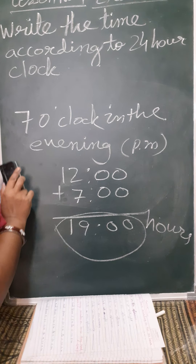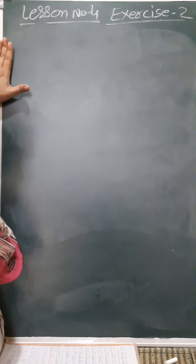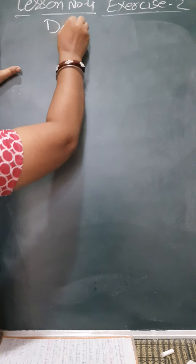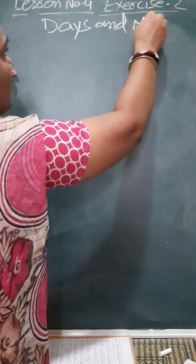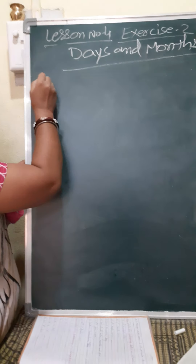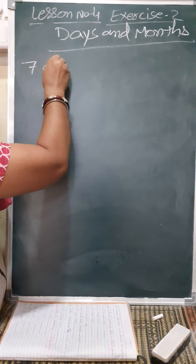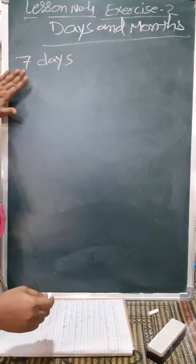Now next we will learn about days and months. You know how many days are there in a week? 7 days. There are 7 days: Sunday, Monday, Tuesday, Wednesday, Thursday, Friday, Saturday.